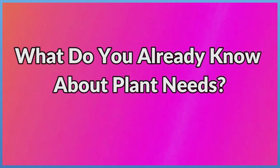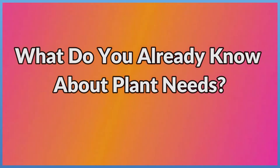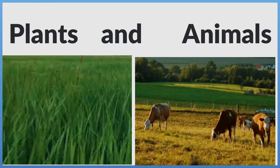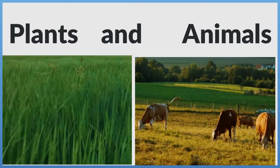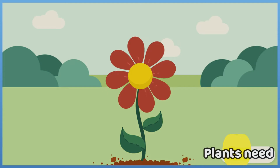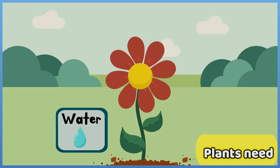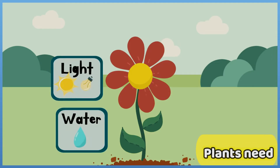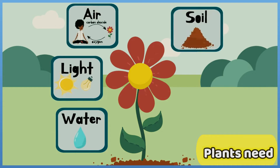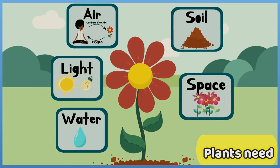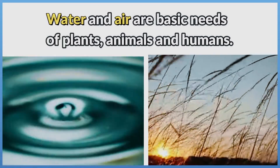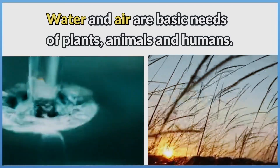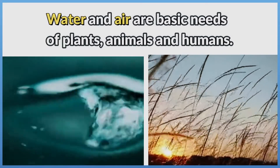What do you already know about plant needs? Plants and animals both need water and air as basic needs. Plants also need sunlight and nutrients from soil to live and grow.